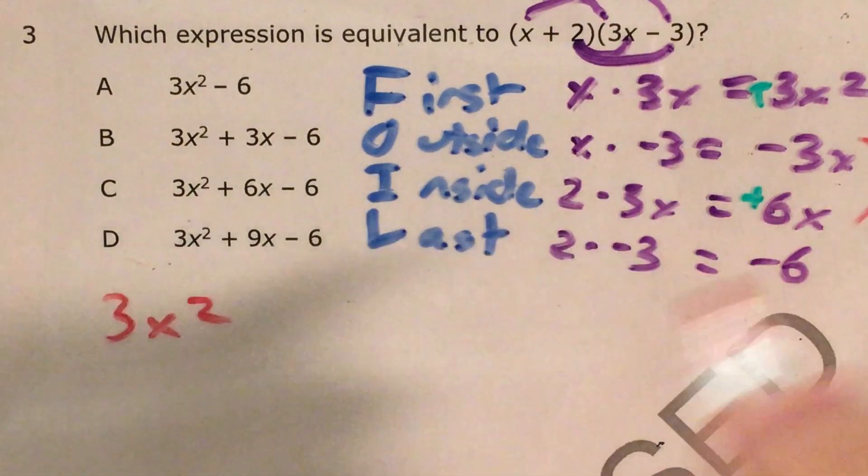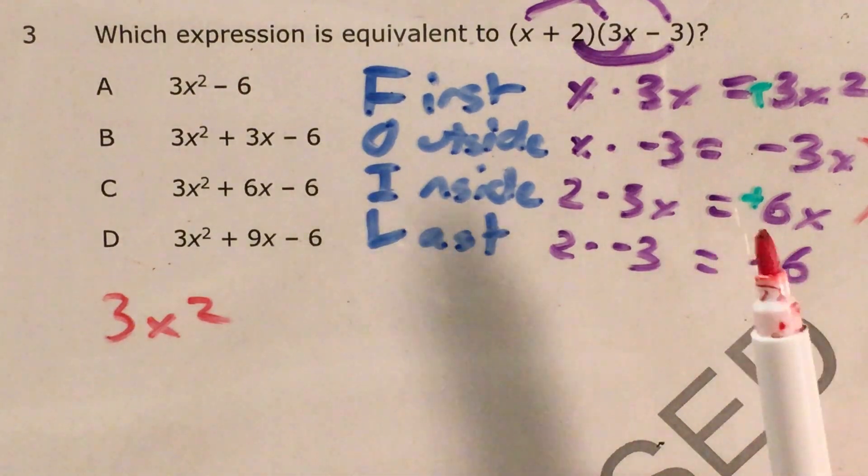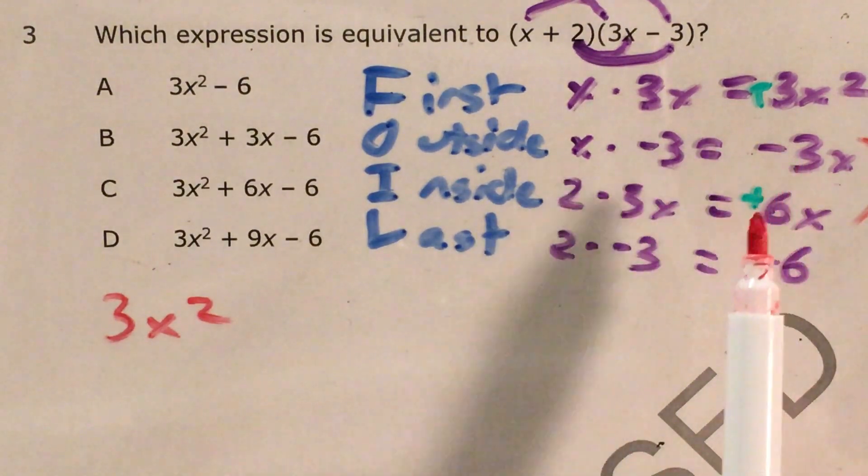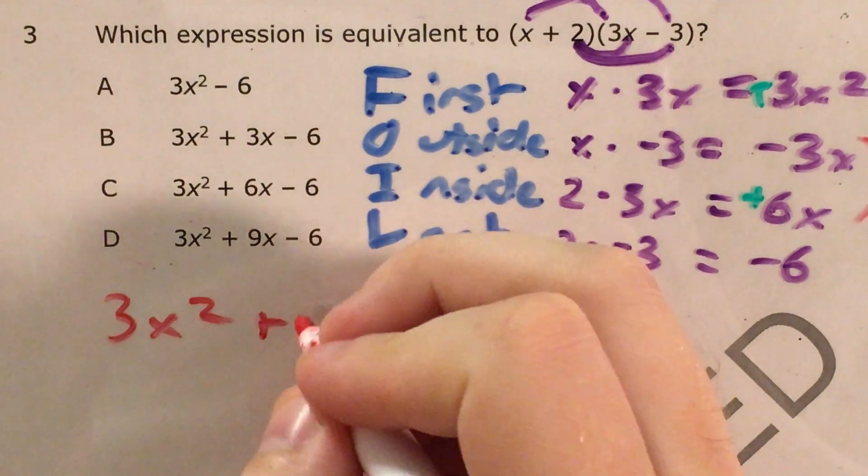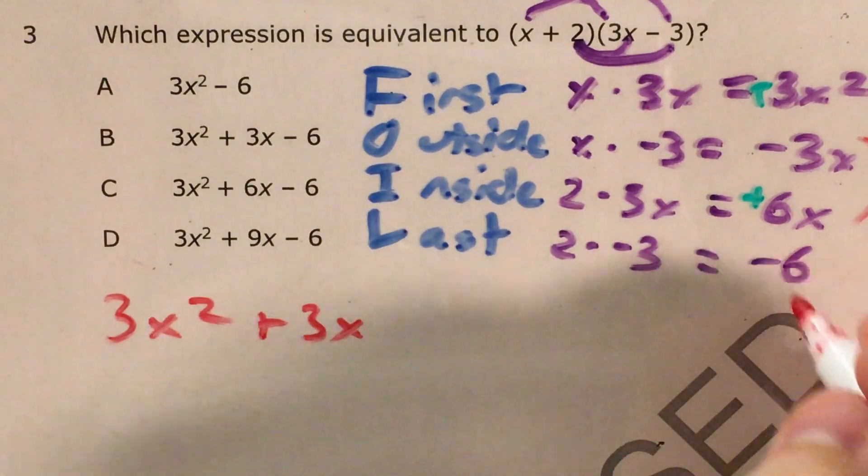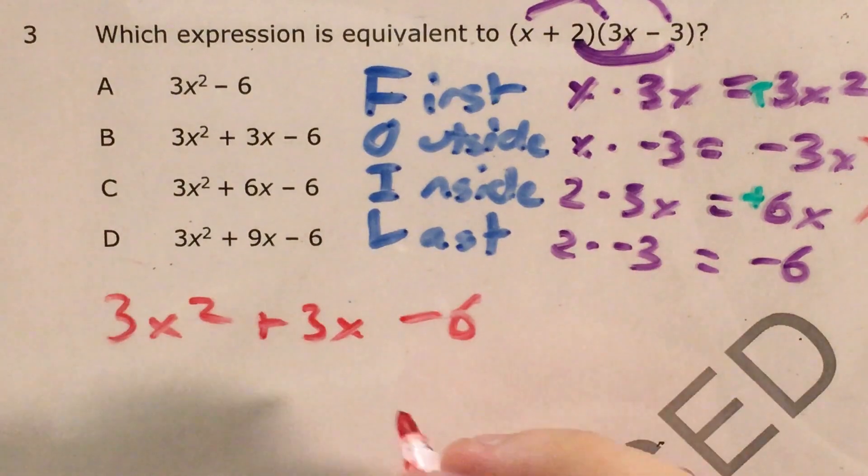Negative 3x and 6x I add together using my rules of integers. I can figure out that negative 3 plus 6 is the same thing as 6 minus 3, which is 3, plus 3x. And a negative 6 has nothing to combine it with, so it becomes minus 6 in the context of this expression.